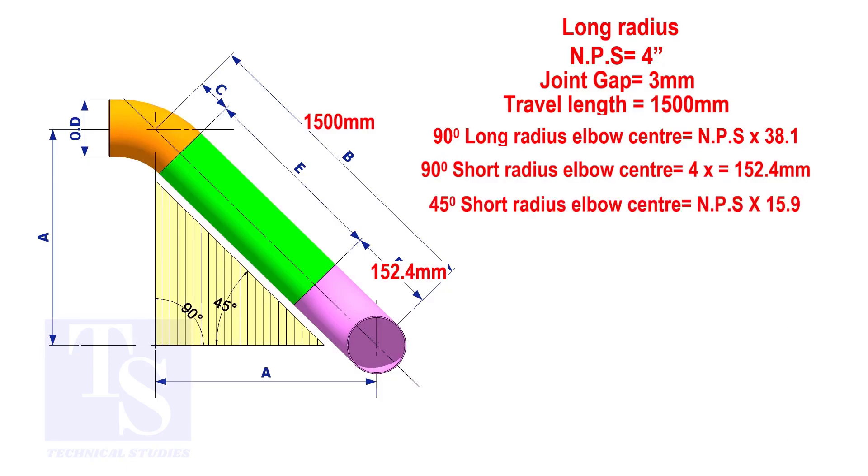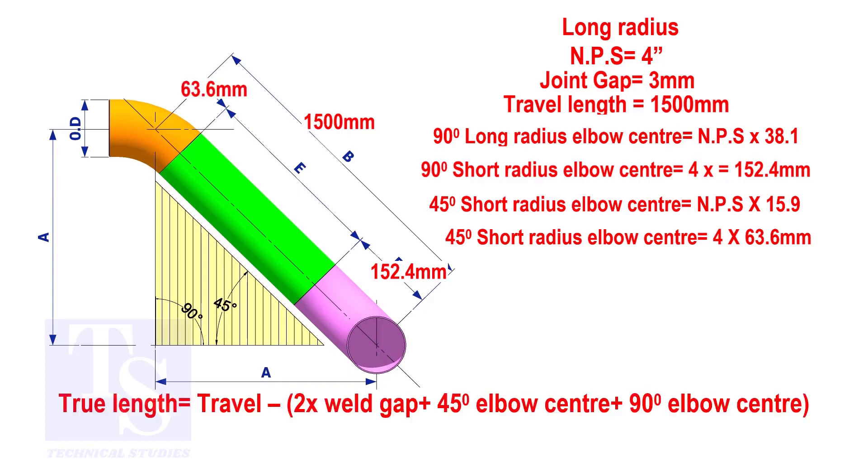To calculate the elbow center of a 45 degree long radius elbow, multiply the nominal pipe size by 15.9. The answer is 63.6 millimeters. Apply the calculation. The true length of the pipe is 1278 millimeters.